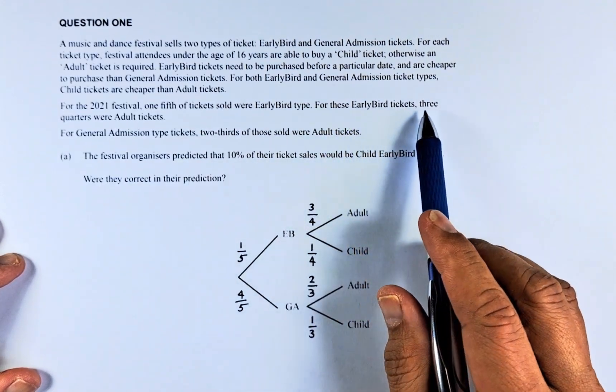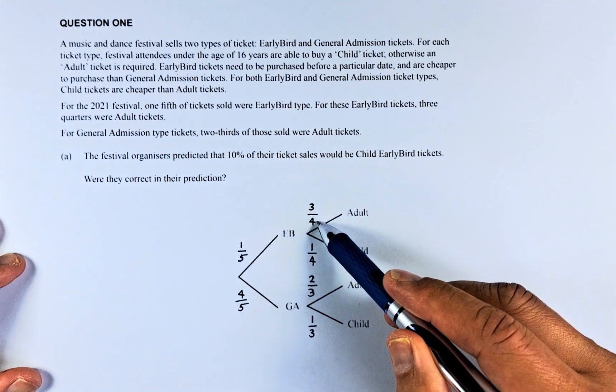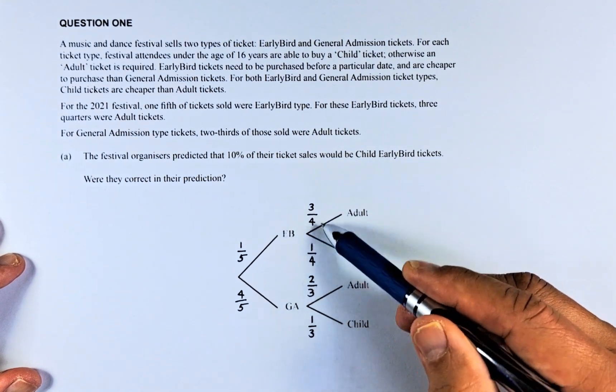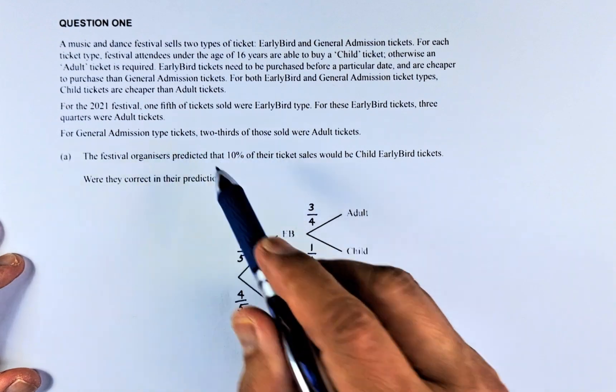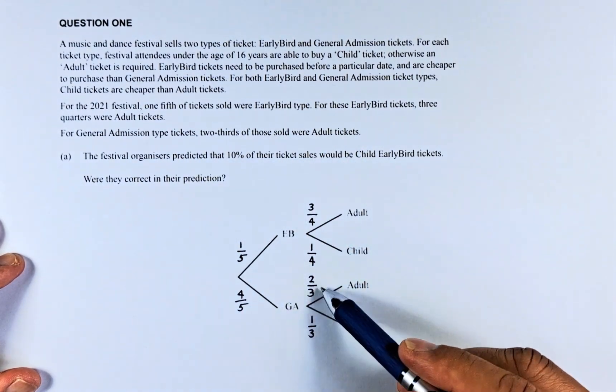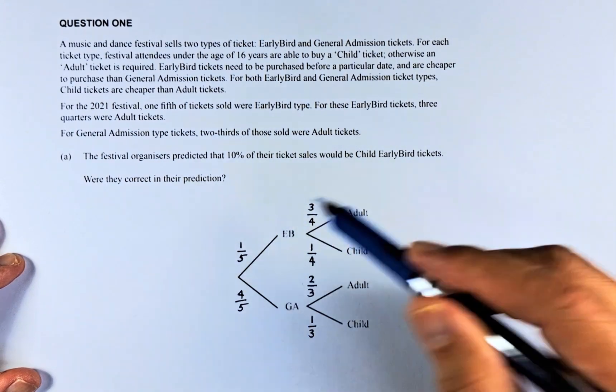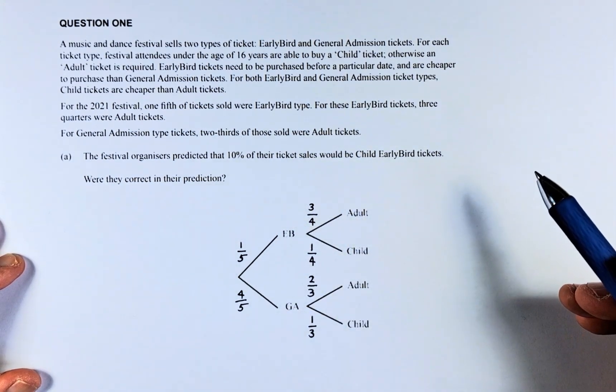So for these early bird tickets, three-quarters were adult tickets. So adult, three-quarters and child will be one-quarter because these two numbers must add up to one. For the general admission ticket, GA, two-thirds were adult tickets. So two-thirds adult, and child will be one-third. So this is the template for the probability tree diagram.